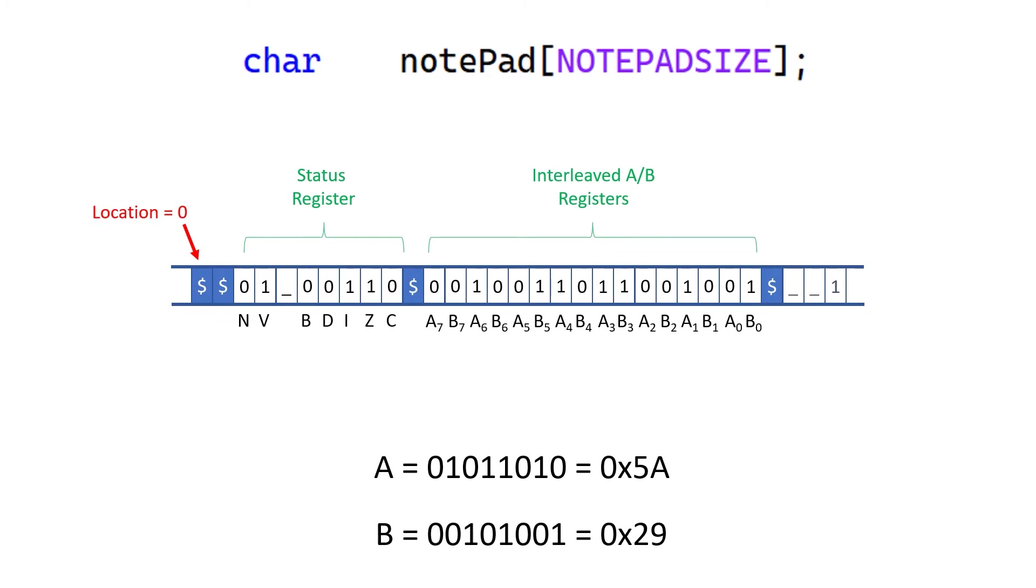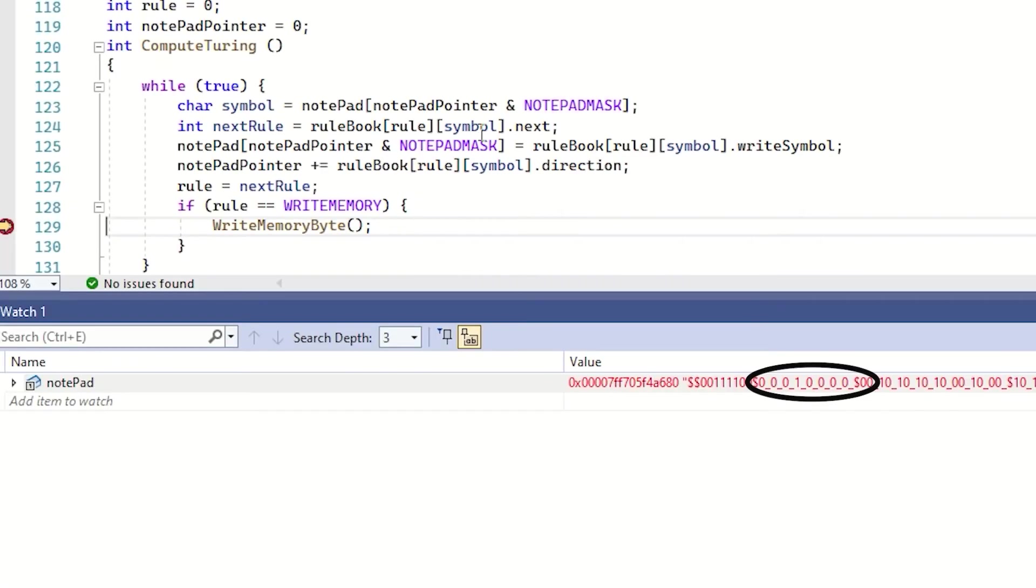What I want to do is interleave the values of the A register and the B register variables. Again, it's up to me to define what the meaning of each of these boxes is. So if I want to put A0 next to B0 and A7 next to B7, I can. It's my call. So now all the bits of A are interleaved with all the bits of B, but they're all lined up so they're effectively occurring in pairs.